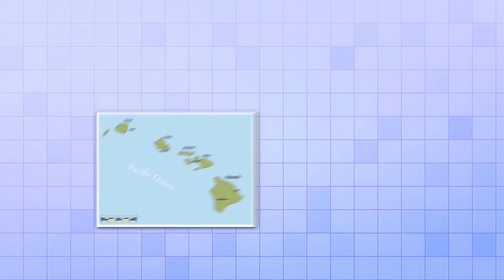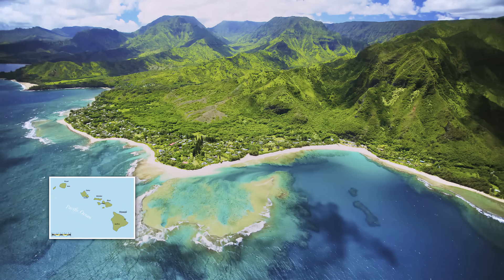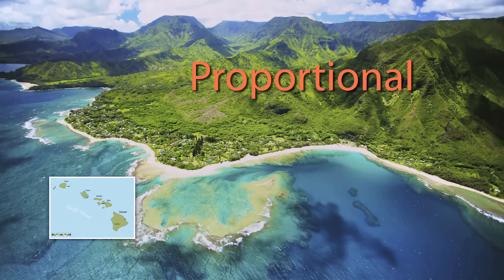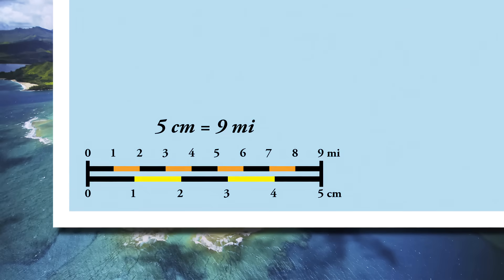For example, this map of Hawaii is a lot smaller than the actual Hawaii. But even though the map is smaller, it's still proportional to the real island. And there's even a scale on it to show the relationship between the two sizes. It says that 5 cm on the map is equal to 9 miles on the real island.